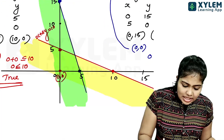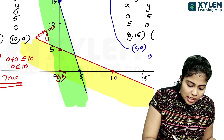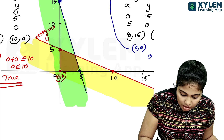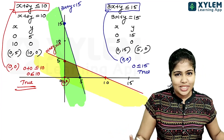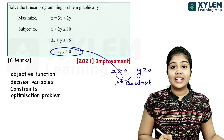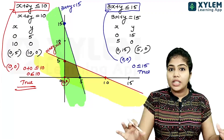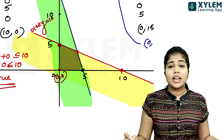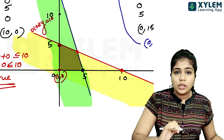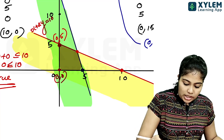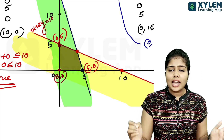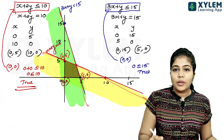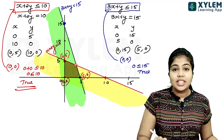The common region is our feasible region. We want to maximize our objective function over this region. We mark all the corner points of the feasible region: 0, 0; 0, 5; 5, 0; and the fourth intersection point.